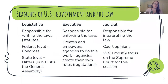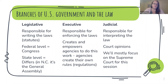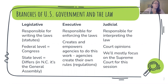Three branches of the U.S. government and the law — this is kind of how I'm going to frame this for you today. We have the legislative branch, and at the federal level that is Congress — the Senate and the House of Representatives. They are responsible for writing the laws. Laws are also called statutes. At the state level it really differs — every state's legislature has two chambers, bicameral, except for like Nebraska. In North Carolina it is the General Assembly that is our legislative body.